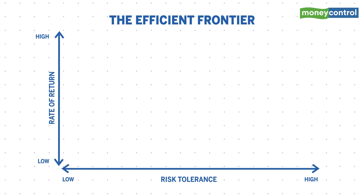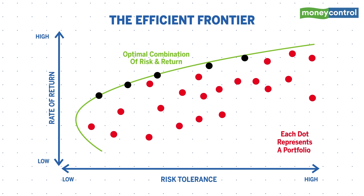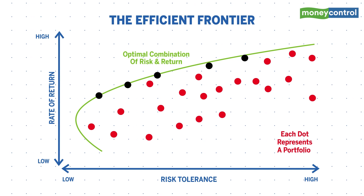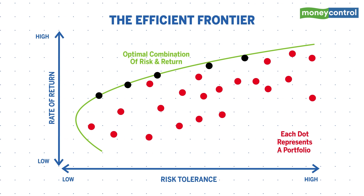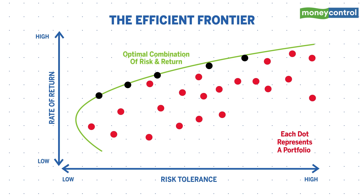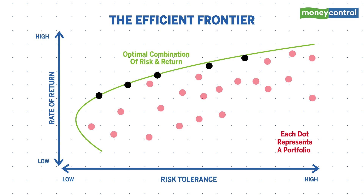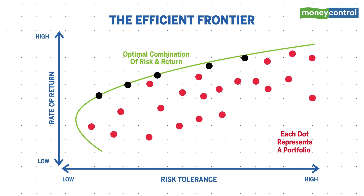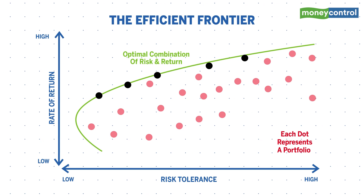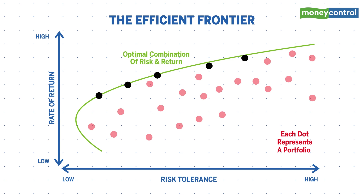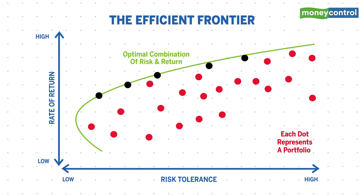A curved line is drawn which represents the most efficient portfolios at an assumed level of risk. All the portfolios falling below or on the right side of the efficient frontier are undesired portfolios, because these have lower returns for a high degree of risk.